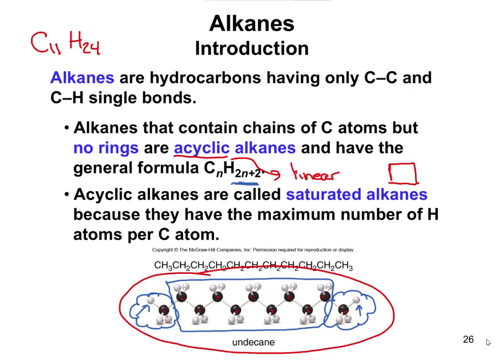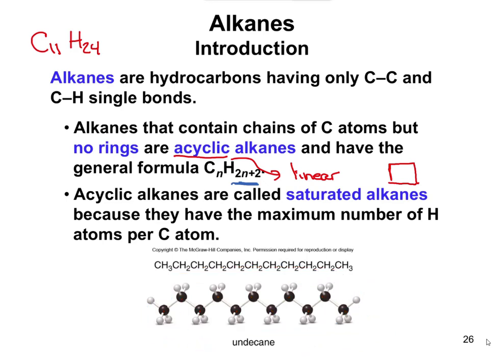Another term is saturated alkanes — acyclic alkanes are called saturated alkanes. If you look at this structure, every single carbon is packed with hydrogens, and carbons can only have four bonds total. If you picked a random carbon, you couldn't put an extra hydrogen on it because it would have too many bonds. So saturated alkanes means there's no way to add any more hydrogens — whenever you have the formula CnH2n+2, those are saturated alkanes.